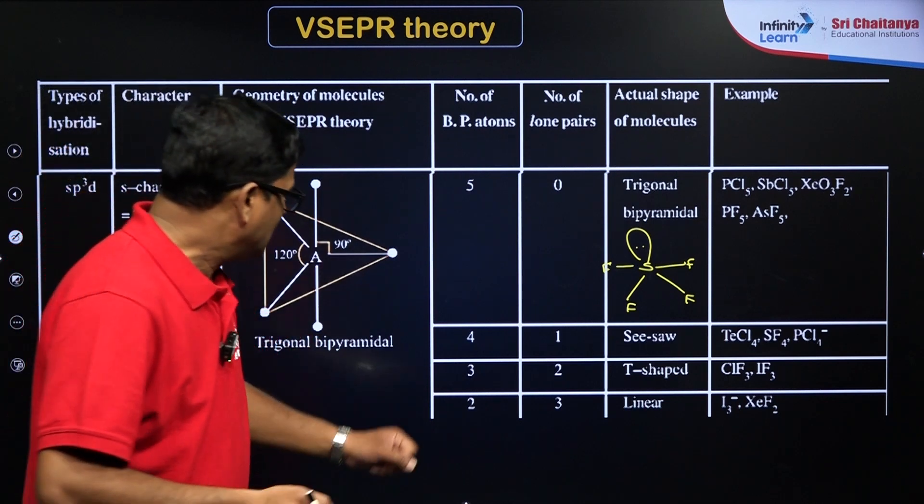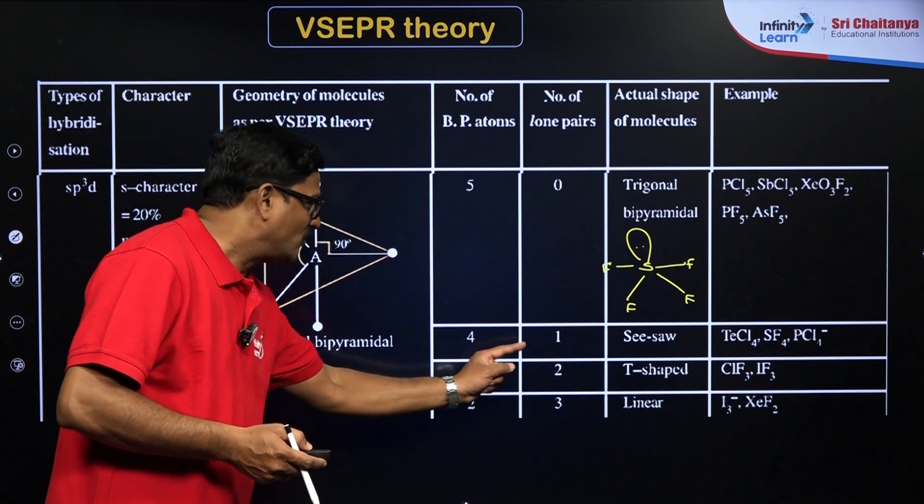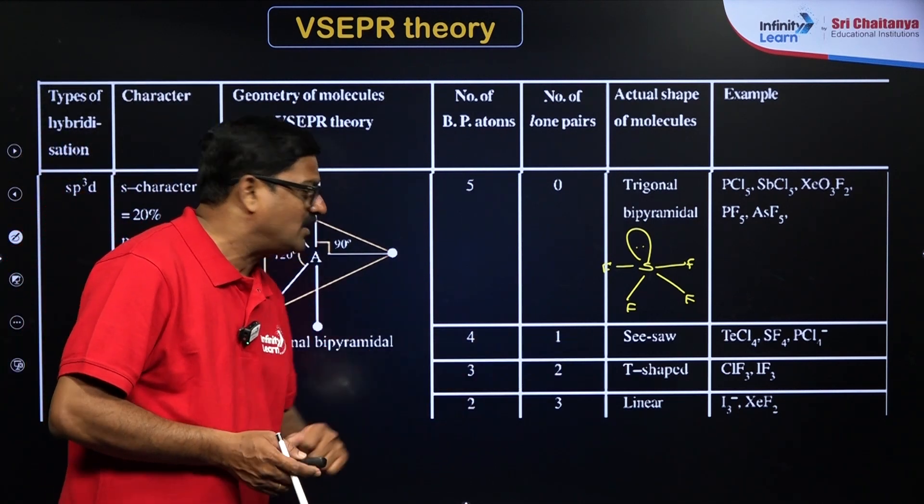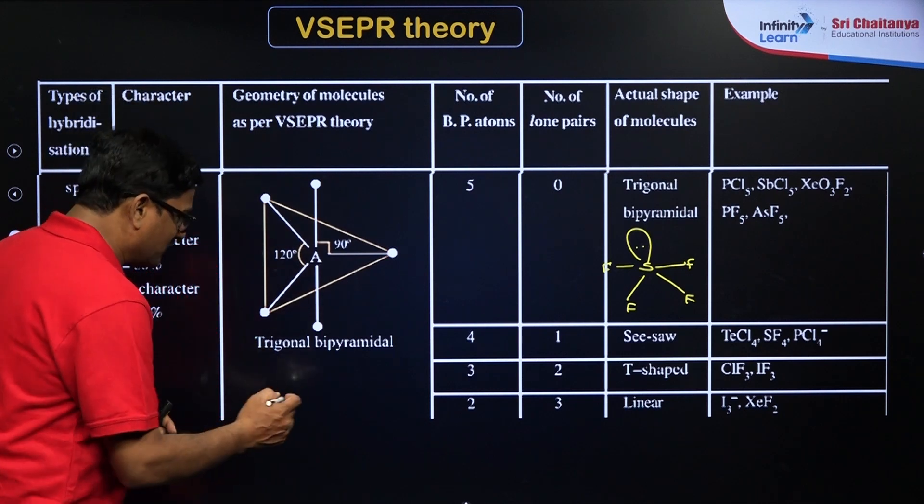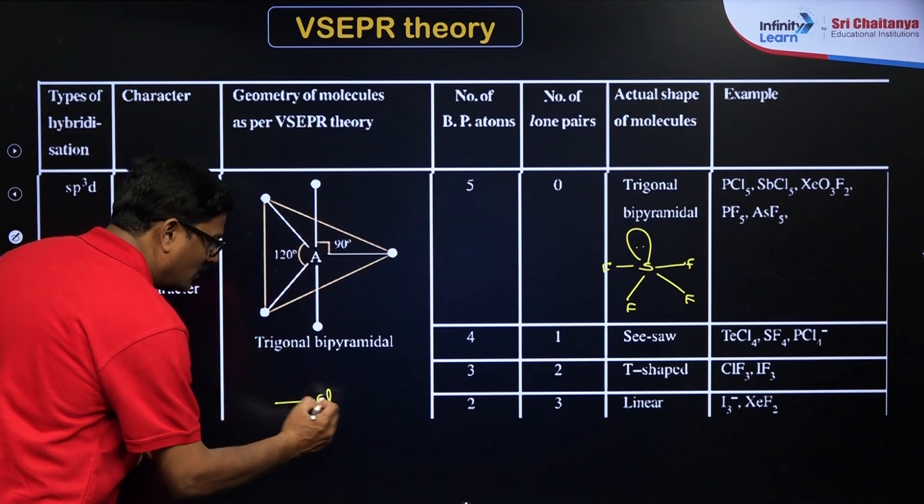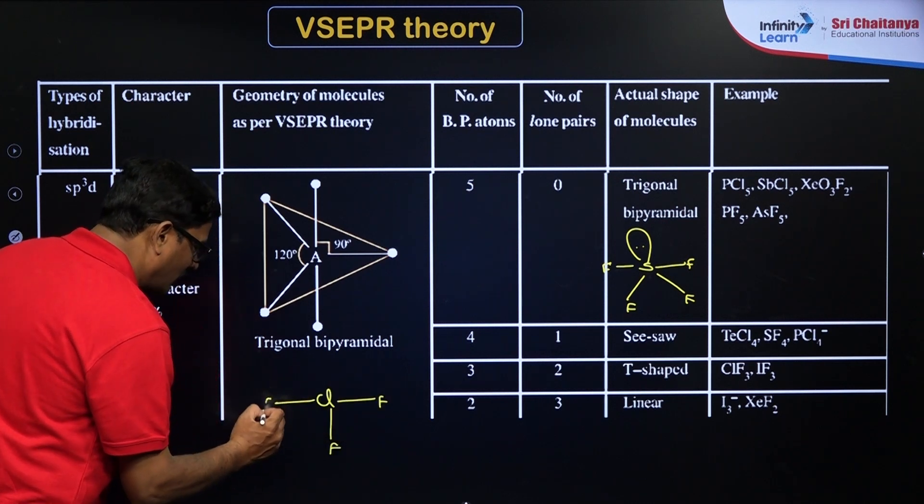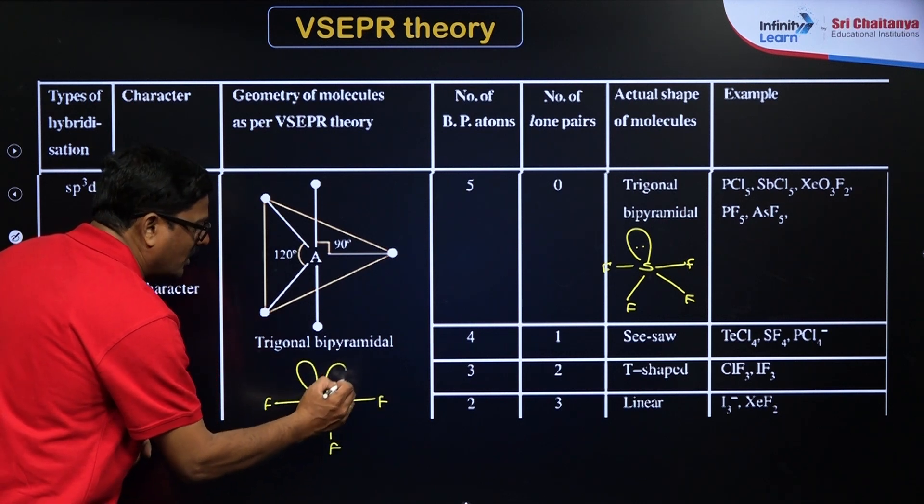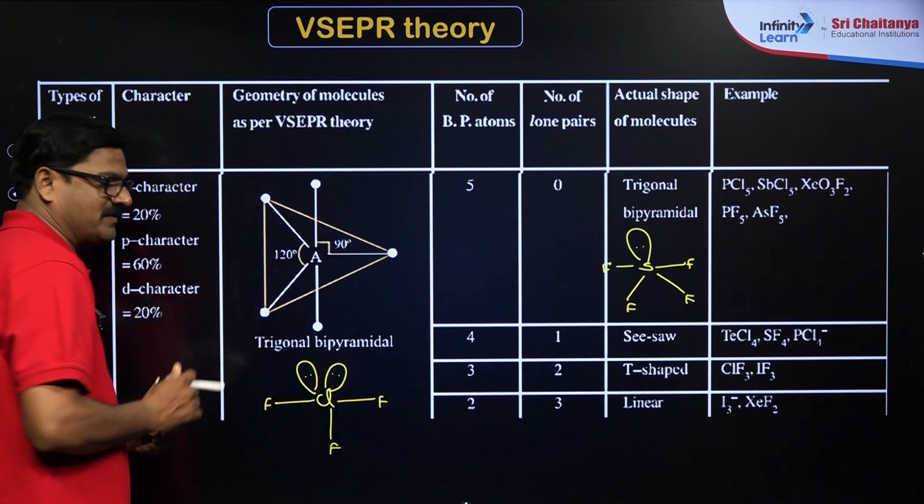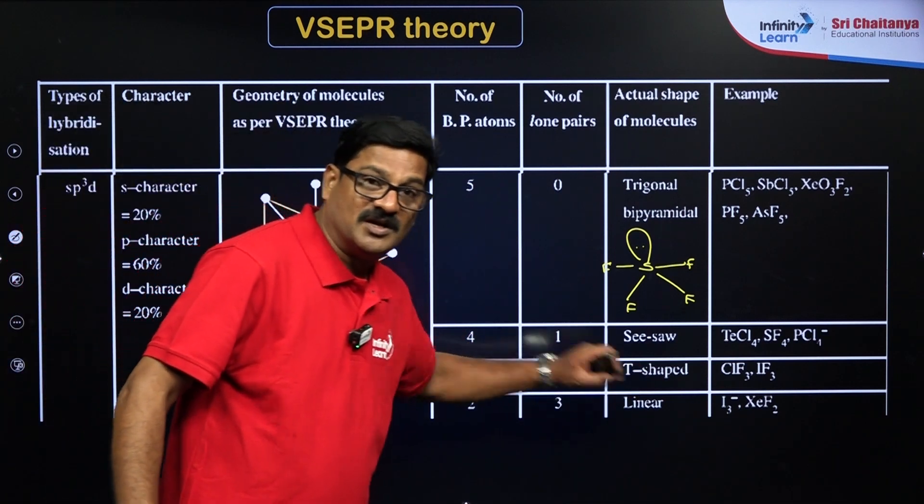Like that, you have so many. You can have bond pairs of 3, lone pairs are 2, it is going to be T-shaped. ClF3: chlorine, fluorine, fluorine, and fluorine. It is going to have two lone pairs of electrons. The shape is going to be T-shaped.